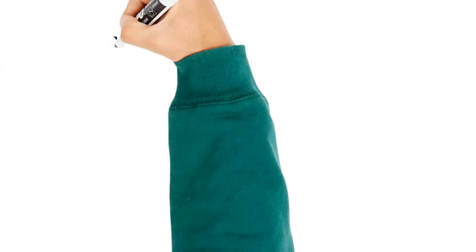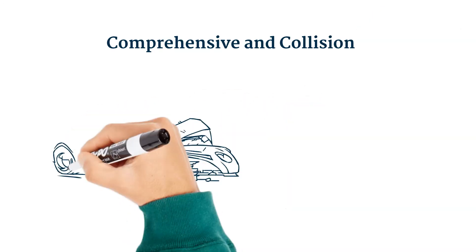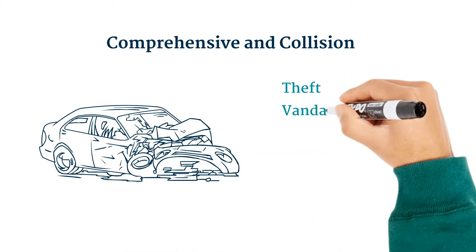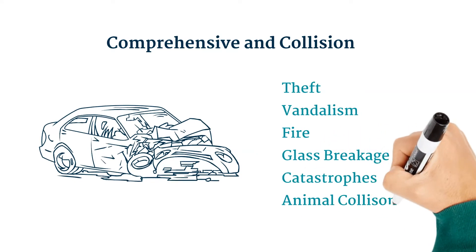What does it actually cover? Comprehensive and Collision coverage includes theft, vandalism, fire, glass breakage, weather-related catastrophes, and animal collisions.